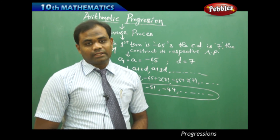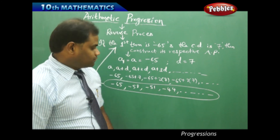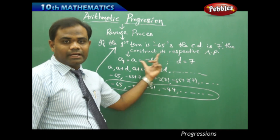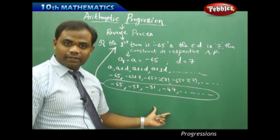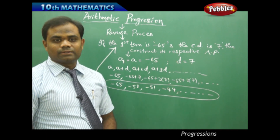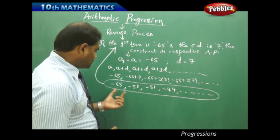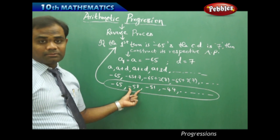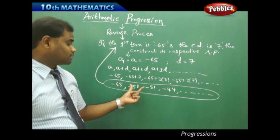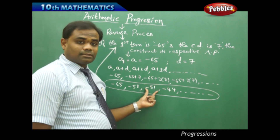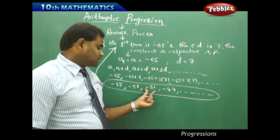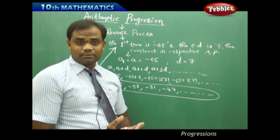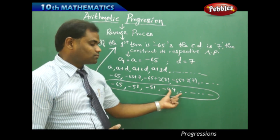So given a sequence I can find A and D, and given A and D I can find the sequence. Here the first term A1 is minus 65, the second term A2 is minus 58, the third term A3 is minus 51, and the fourth term A4 is minus 44.